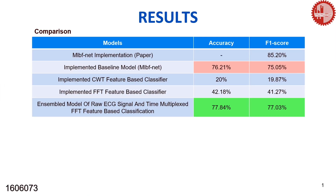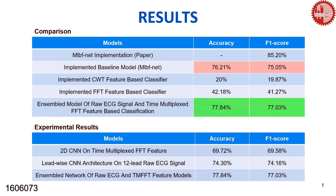In this table, we have summarized the performance of the MLBFNet and different models we implemented. Though the MLBFNet paper published an F1 score of 85.2%, our reproduced MLBFNet performs at about 75%. The CWT-based classifier performed poorly at about 19.87%, and the full FFT-based classifier scored about 41%. These results led us to develop the TMFFT feature, which is lightweight and contains both time and frequency information. When we defined the TMFFT feature and designed a simple architecture, we achieved almost 70% F1 score. We then ensembled two architectures, and the ensemble network outperforms our implemented MLBFNet.